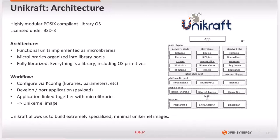I will now introduce Unikraft, the unikernel project we use in the Cocos Hypervisor. Unikraft is a POSIX-compliant library OS with a high degree of modularity provided under the BSD-3 clause license. It implements functional units as micro-libraries and organizes them into library pools. A very important feature is that it is fully-librarized, meaning everything is a library, including the very core operating system primitives.